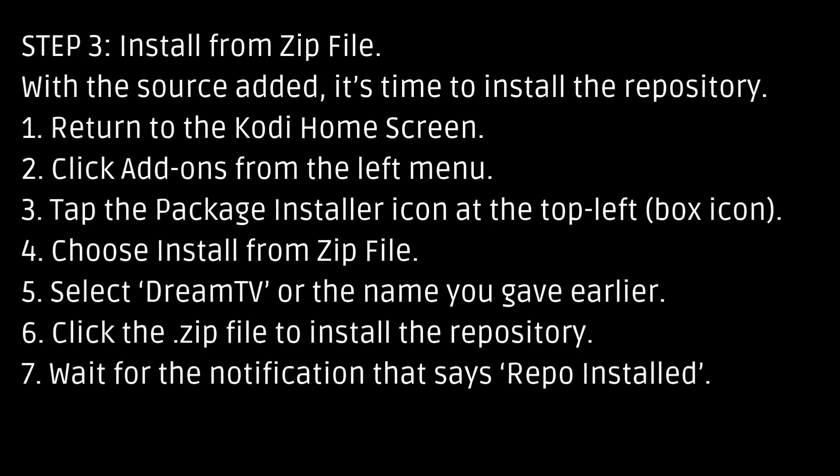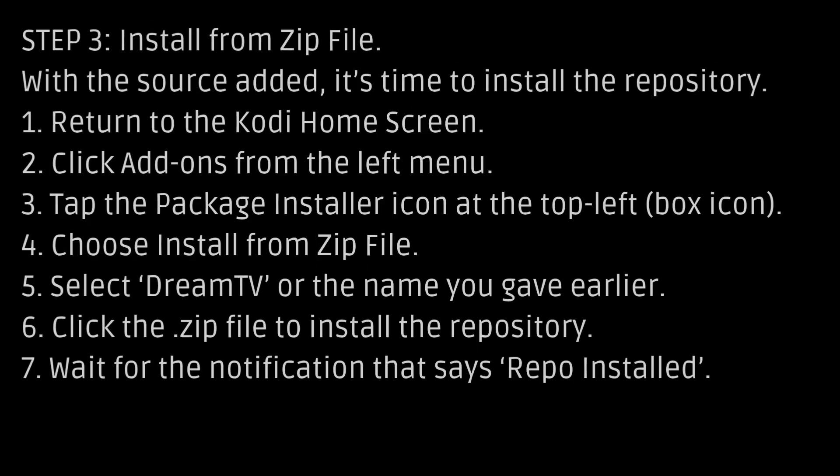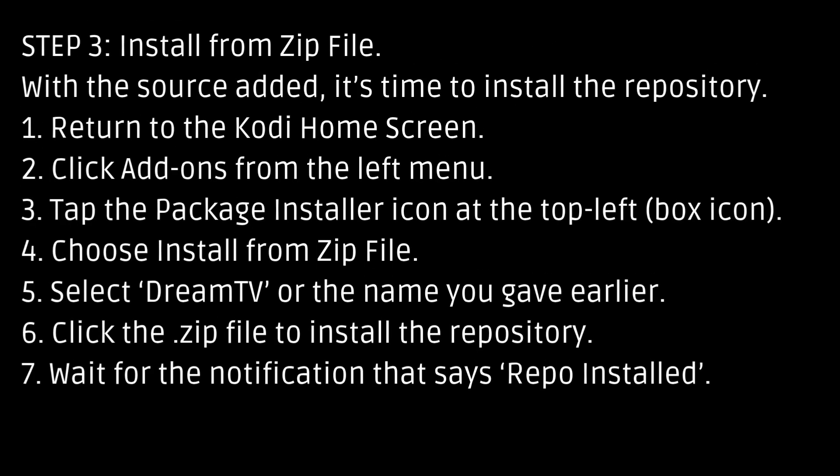Step 3: Install from Zipfile. With the source added, it's time to install the repository. Return to the Kodi home screen, click Add-ons from the left menu, tap the Package Installer icon at the top left, choose Install from Zipfile, select DreamTV or the name you gave earlier, click the Zipfile to install the repository, and wait for the notification that says Repo Installed.